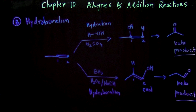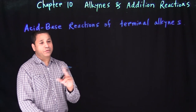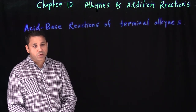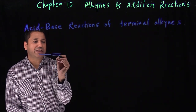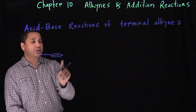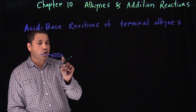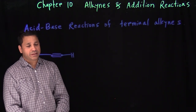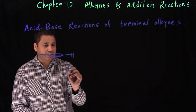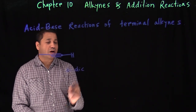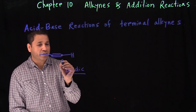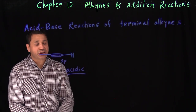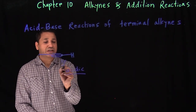The next section is acid-base reactions of terminal alkynes. We have two types of alkynes: internal and terminal. These reactions are only true for terminal alkynes, where the alkyne is at the beginning of the chain. The carbon at the start of the triple bond has a hydrogen attached to it.